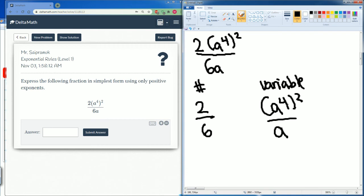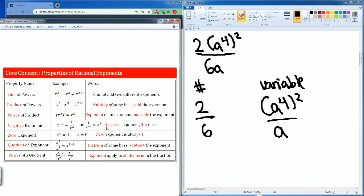We should already know this. a to the fourth to the second power. That is an exponent of an exponent. So you're going to multiply the exponent. So this should be a to the eighth power. You should already know that. And then here this is a quotient of the exponent. Notice this is a one. So this becomes a eight minus one.